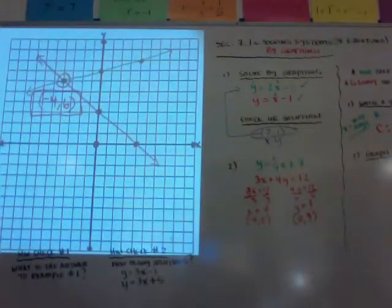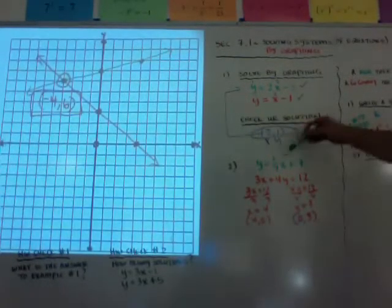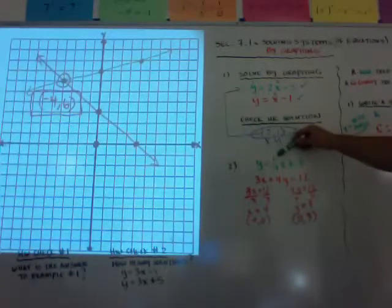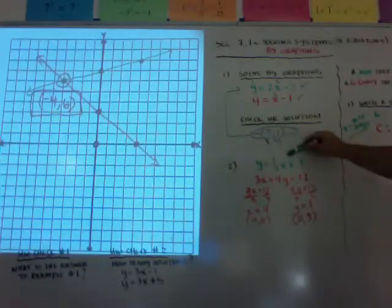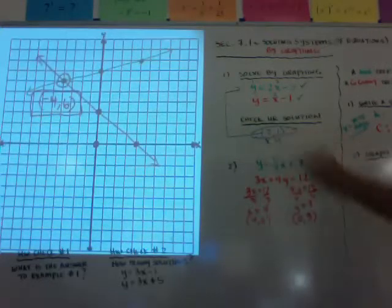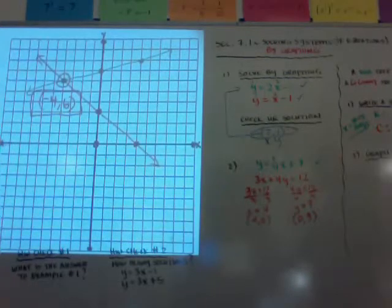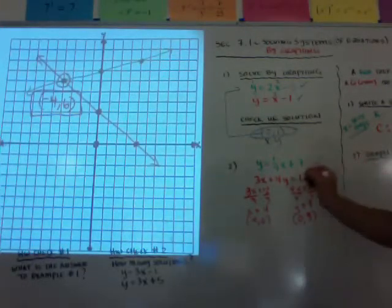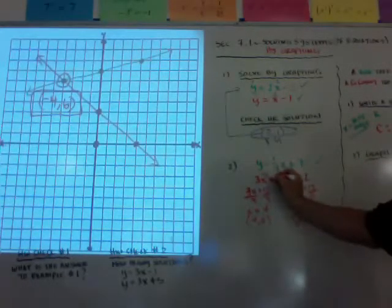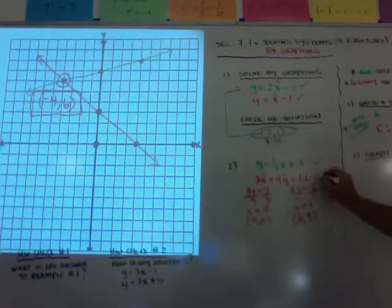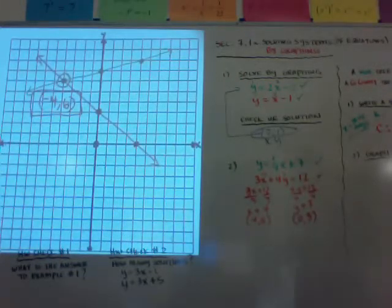You can do a visual check. On the green equation, putting x = −4: one-fourth times −4 is −1, plus 7 equals positive 6 — true. For the red equation, putting x = −4 and y = 6: negative 12 plus 24 equals 12 — that works. So that's how you solve by graphing.